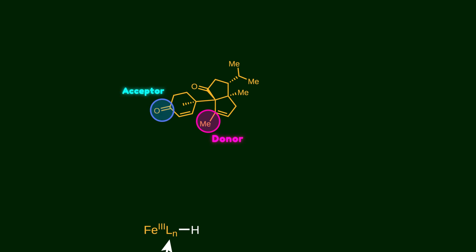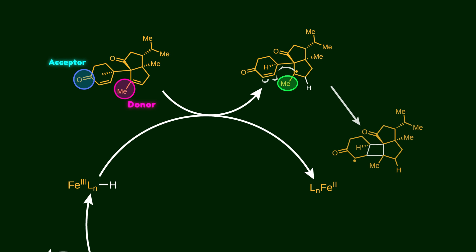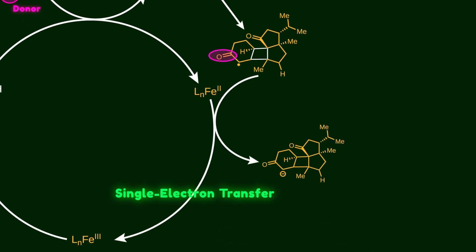The donor olefin abstracts the hydrogen radical from the Fe hydride, forming a radical intermediate. This radical is stabilized by the hyperconjugation effect of the methyl group. Now this highly reactive radical species attacks the acceptor olefin to create a four-membered ring. The newly formed radical intermediate is stabilized by the carbonyl group. Then the radical is converted to an anion through a single-electron transfer mechanism, which generates Fe(III). Finally, the anion abstracts a proton from the solvent, and the catalytic cycle is repeated.